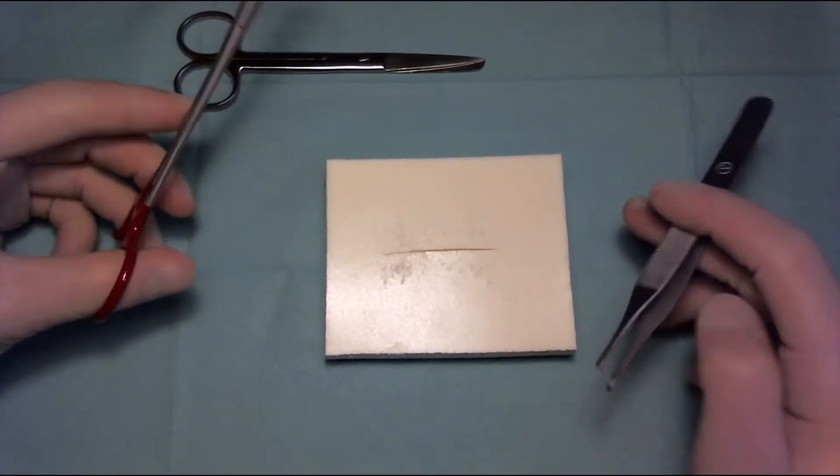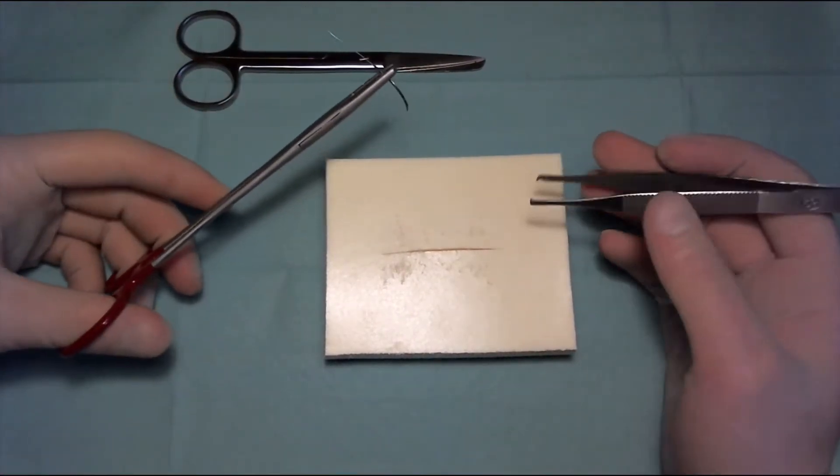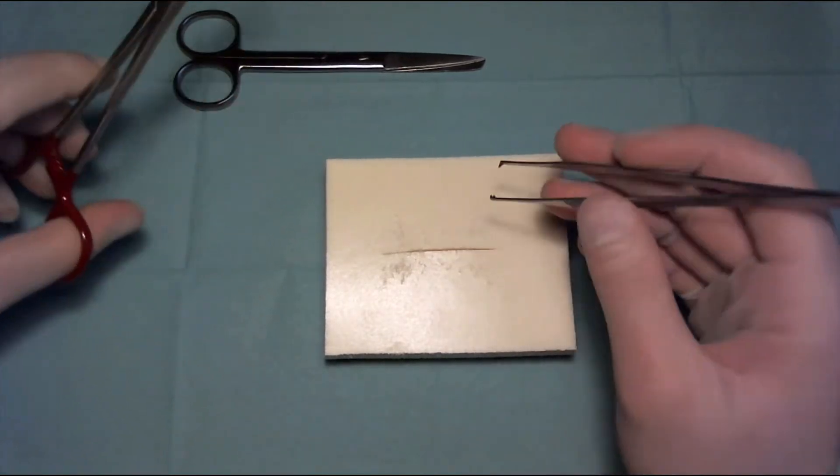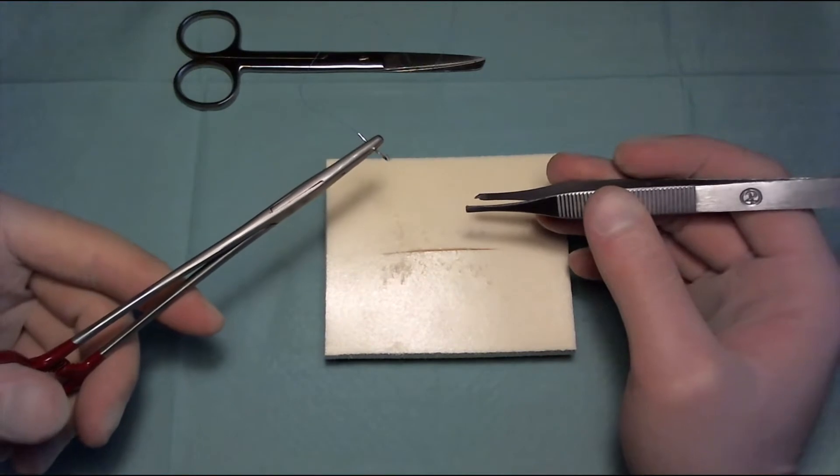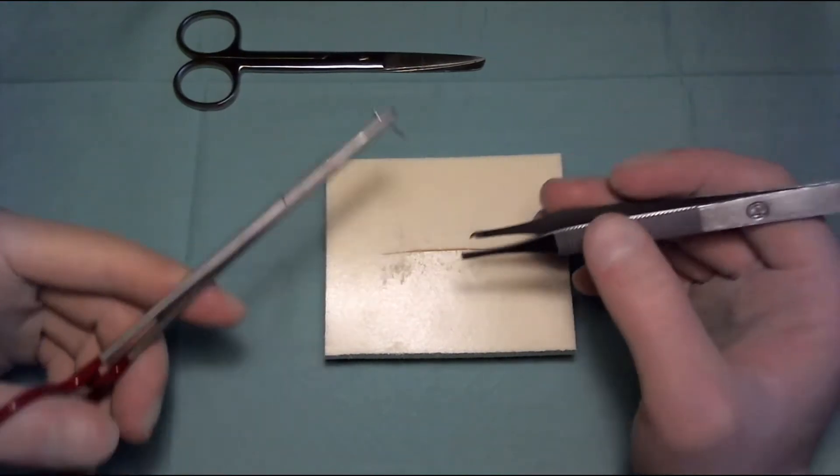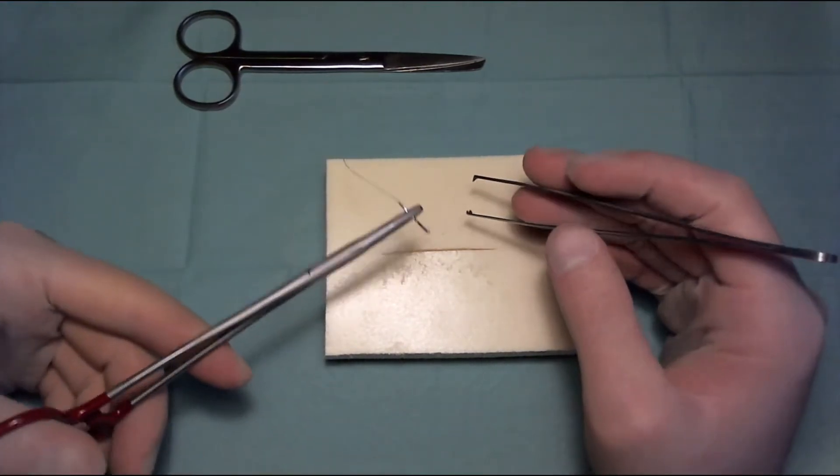We're going to look at how to do a Denabi suture, which is also called a vertical mattress suture. We're going to start with the same equipment and position as with all other sutures, as you can see in the simple interrupted video.